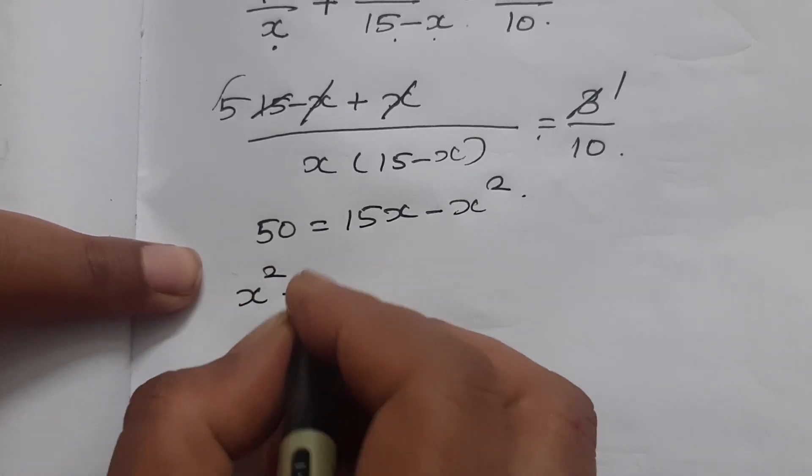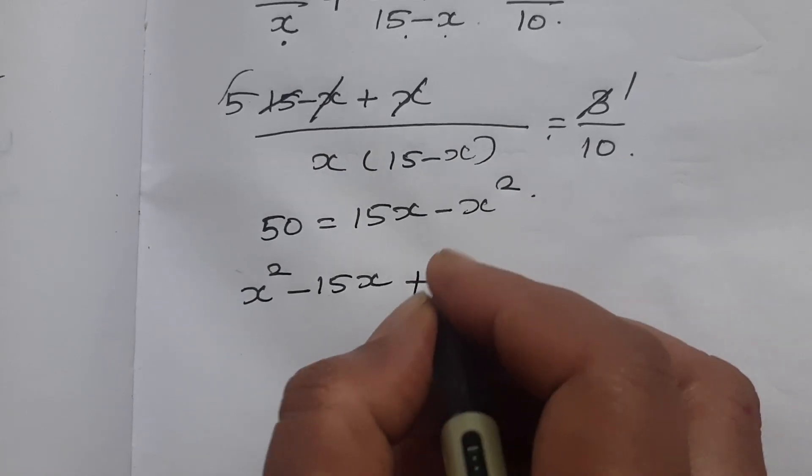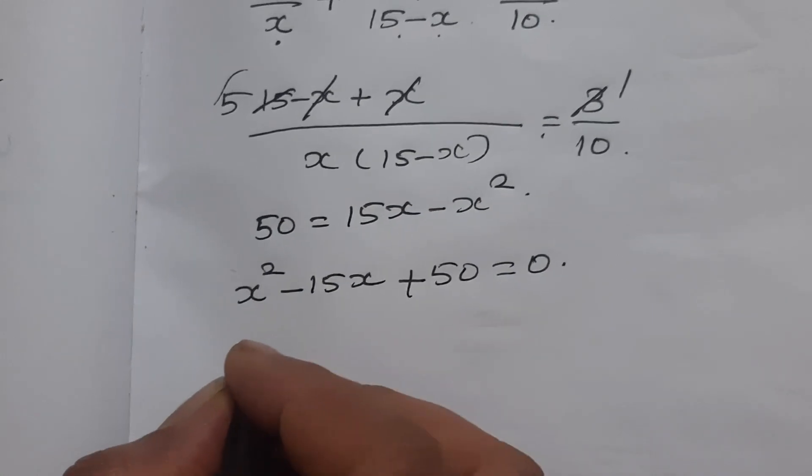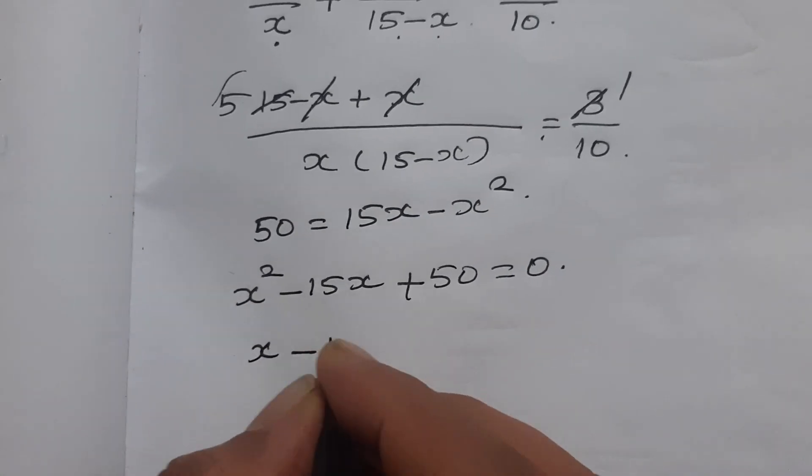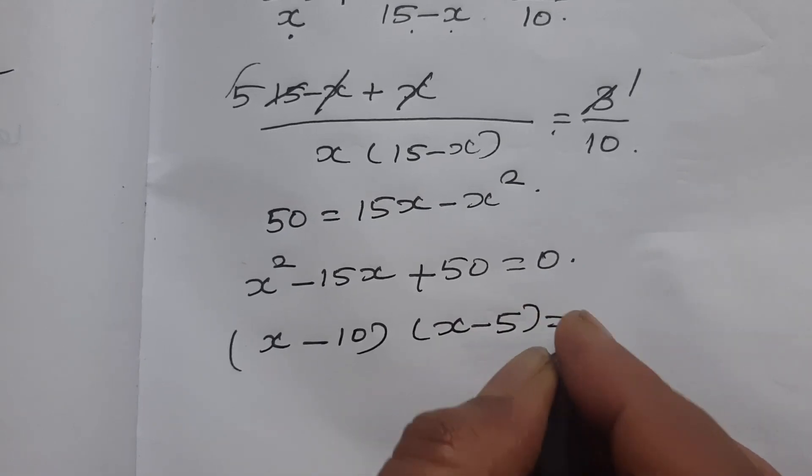Rearranging: x square minus 15x plus 50 equals 0. Now factorizing, we get x minus 10 times x minus 5 equals 0.